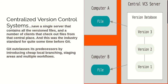Git outclasses its predecessors by the fact that it introduces cheap local branching, staging areas, and multiple workflows — which the centralized version control system really lacks.